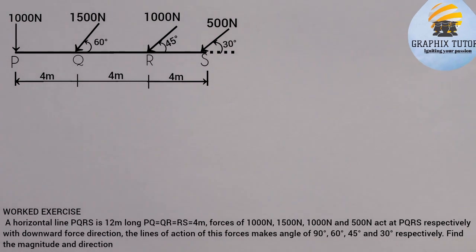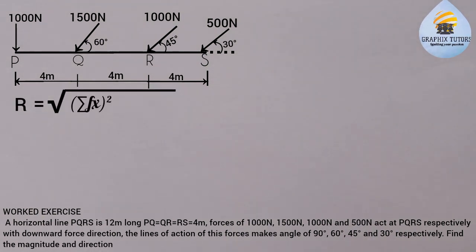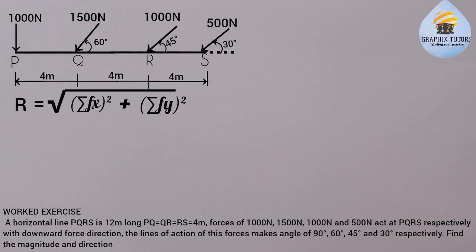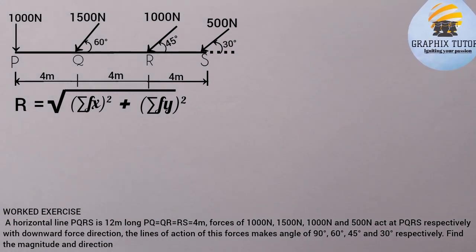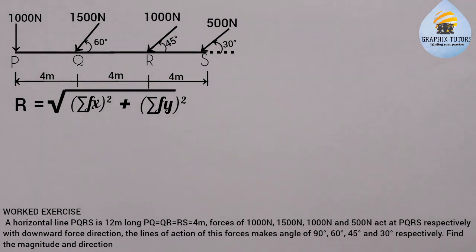We are looking for the magnitude of the resultant of this system. The resultant force is given by the square root of (ΣFx)² + (ΣFy)². Before finding ΣFx or ΣFy, we need to resolve the inclined forces. We have three inclined forces: 1500 N at 60°, 1000 N at 45°, and 500 N at 30°. We apply the principle of resolution of forces. If you don't know how to apply this principle, click the link at the top right corner of the screen.